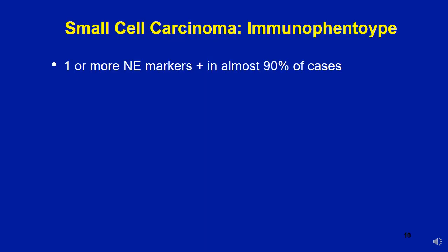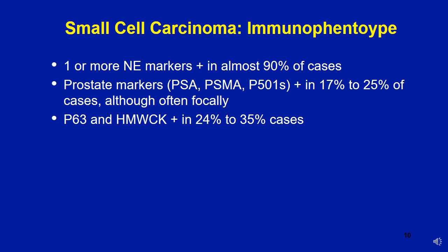Let us understand the immunophenotype of small cell neuroendocrine carcinoma. One or more neuroendocrine markers are positive in almost 90 percent of cases, but if you have classic small cell neuroendocrine carcinoma not showing neuroendocrine marker expression, you can still make the diagnosis — though it is a good idea to have other markers done as well. Prostate markers are typically negative or weakly positive in 17 to 25 percent of cases. P63 and high molecular weight cytokeratin can be positive in 24 to 35 percent of cases. Ki67 is typically more than 80 percent.